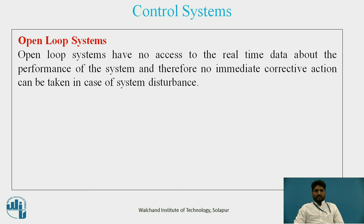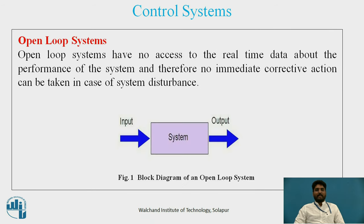Control System — Open Loop Systems: Open loop systems have no access to real-time data about the performance of the system, and therefore no immediate corrective actions can be taken in case of system disturbance. This system is normally applied only where the output is almost constant and predictable. An open loop system is unlikely to be used to control machine tools since the cutting force and the loading of the machine tool is never constant. Figure 1 shows a block diagram of the open loop system, where input and output are shown but there is no feedback from output to input.